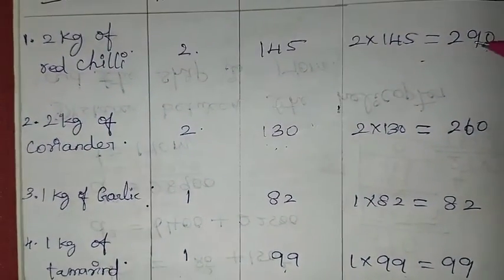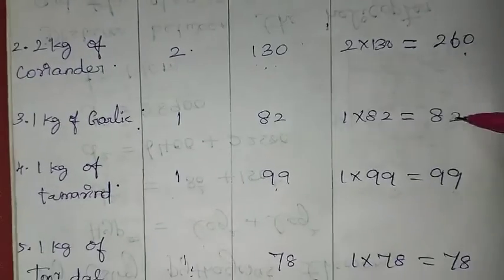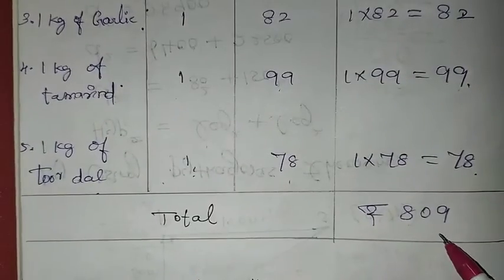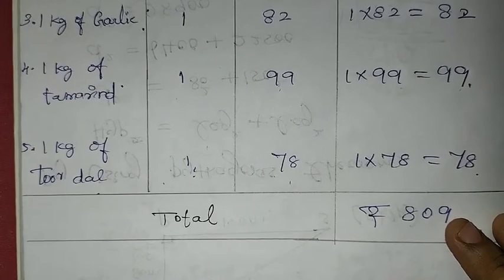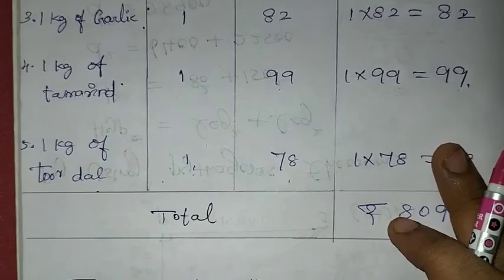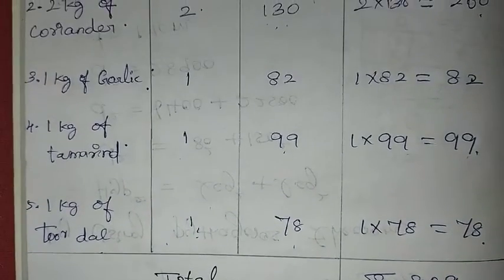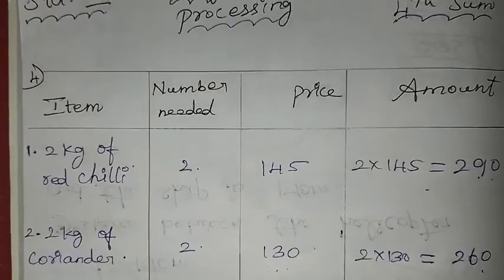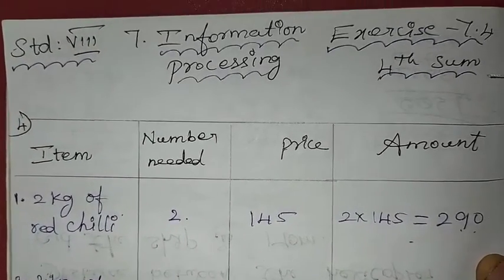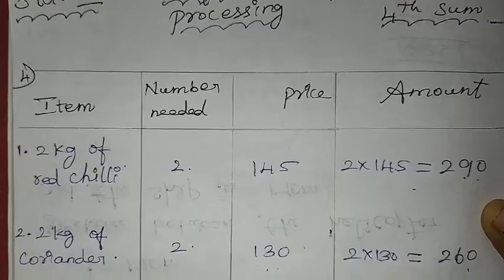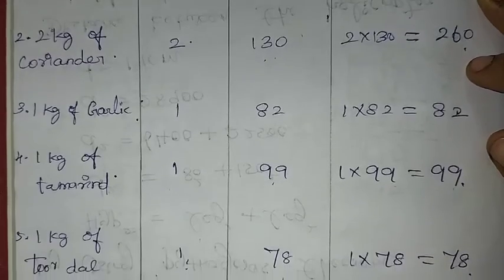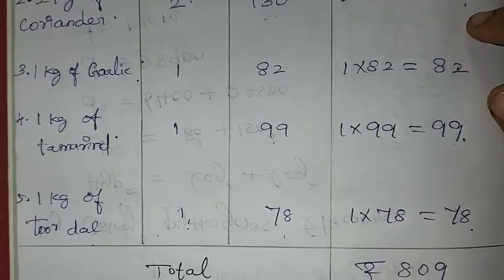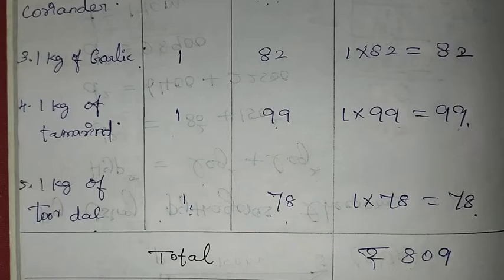The total price is 290 plus 260 plus 82 plus 99 plus 78, which adds up to Rs.809. The amount is 809, which is within the budget of 1,000 rupees. The approach is correct. Thank you so much for watching, students.